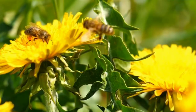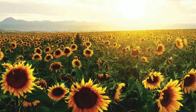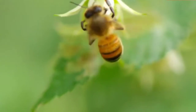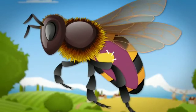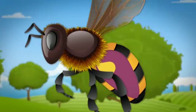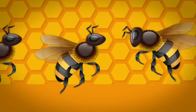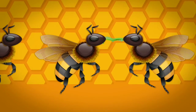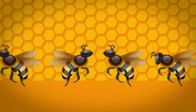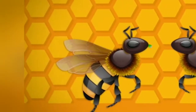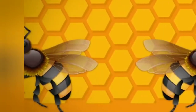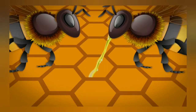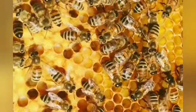Worker bees forage for nectar, visiting over 5,000 flowers per day. When the bees return to the hive, the forager bee will vomit the nectar into the mouth of another worker. That bee will vomit it into another bee's mouth, and so on. House bees then take the nectar inside the colony and pack it away in hexagon-shaped beeswax honey cells.